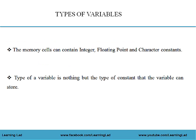The type of variable refers to the type of constant that the variable can store. Memory cells can contain integer, floating point and character constants. The type of variable may be integer, floating point, real or character.